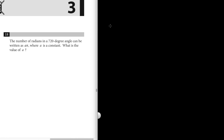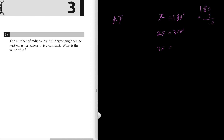Number eighteen: the number of radians in a 720-degree angle can be written as a times pi. We know pi equals 180 degrees and 4 pi equals 4 times 180, which is 720 degrees. So 720 degrees equals 4 pi, and the value of a is 4.